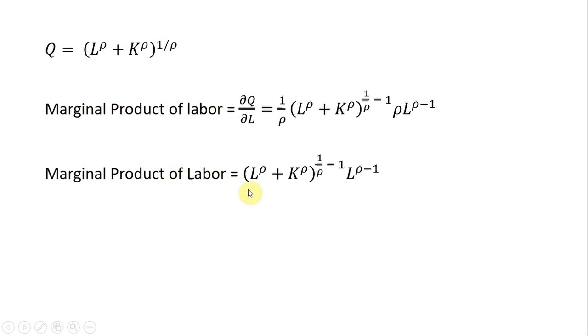So putting it all together, marginal revenue product is marginal revenue, the 1 half P from the other slide, multiplied by the marginal product of labor. Okay, and that's the end. Hope you found this helpful.